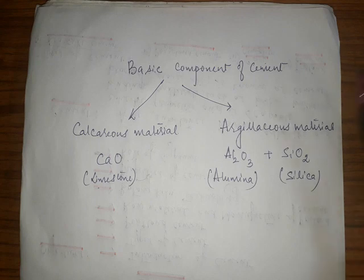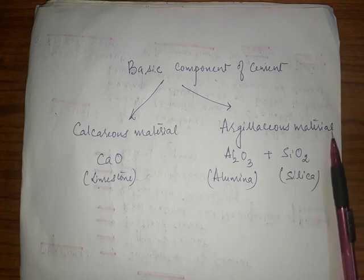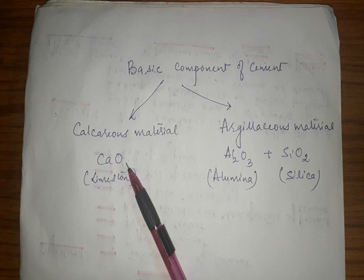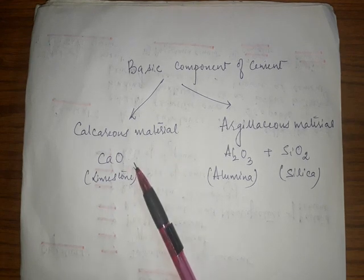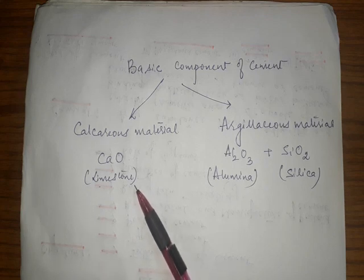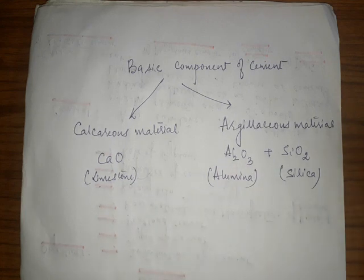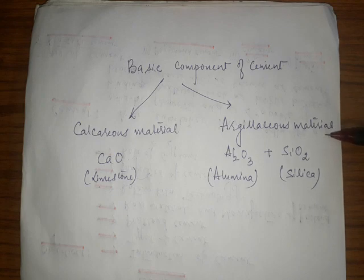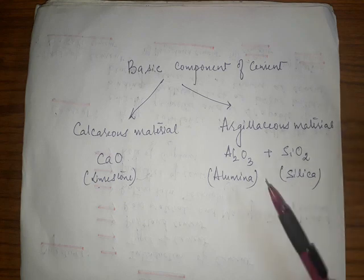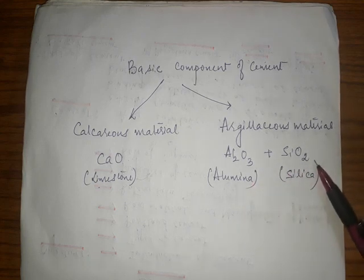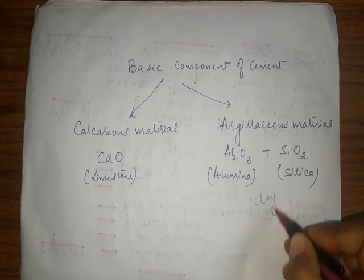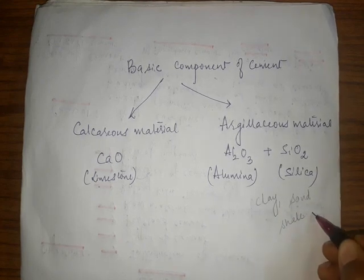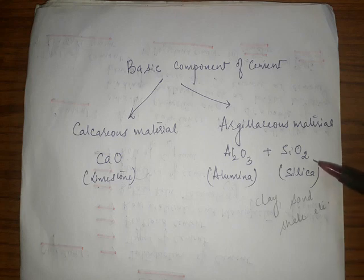The basic components of cement include calcareous material and argillaceous material. Calcareous material mainly means lime, that is calcium oxide, which can be easily obtained from naturally available limestone. Argillaceous material includes alumina (aluminum oxide) and silica (silicon oxide), which are easily obtained from clay, sand, shale, and other types of rocks.